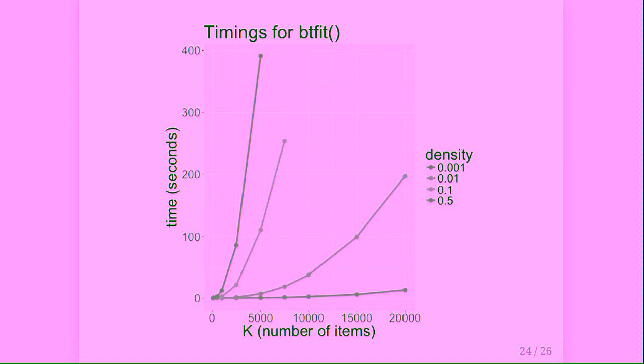A note on scalability: performance depends largely on the number of items and the density of the matrix, though with more items you would hope the matrix is sparser. We are also working to improve timings — the main btFit function is coded in Rcpp using a sparse symmetric matrix. Currently the RcppArmadillo package doesn't support sparse symmetric matrices, but that is being developed, and once available we hope to implement it and reduce these timings by close to half.